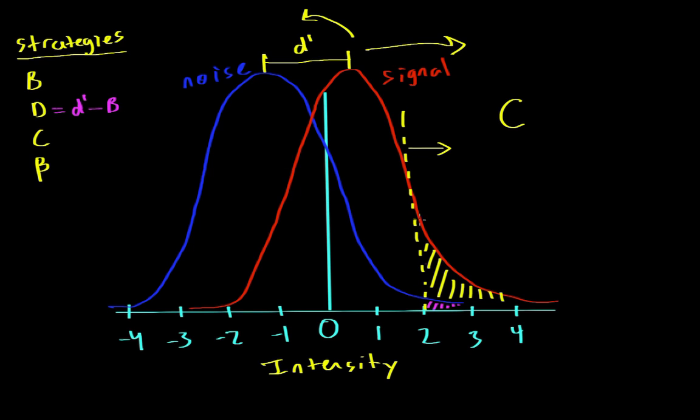So we choose a threshold, let's say 2, and let's say that d prime in this example is 1. Then we would have 2 minus 1, and we'd get 1. So if we were using the D strategy, then anything above a 1 would get a yes. Anything below would get a no.